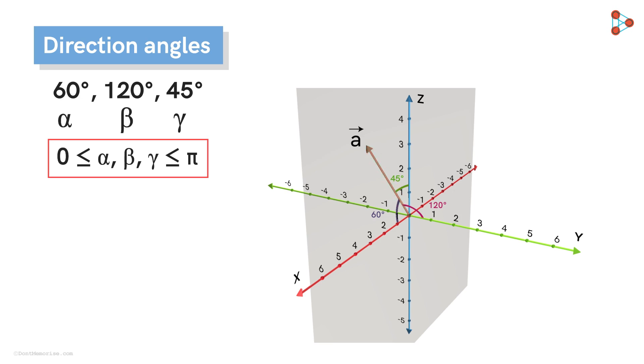Note that the direction angles do not tell us anything about the magnitude of a vector. They will only tell you about its direction. For example, a vector twice the magnitude and in the same direction will have the same set of direction angles.